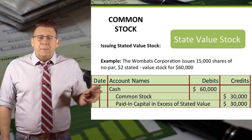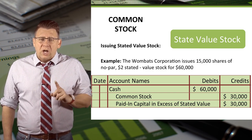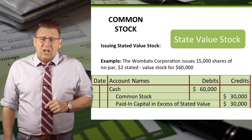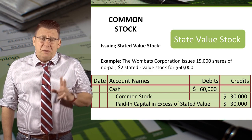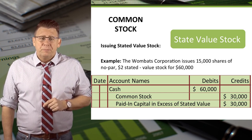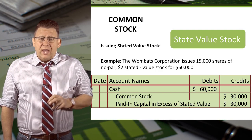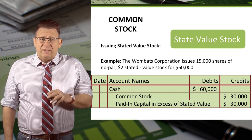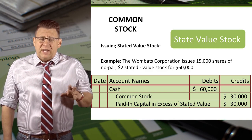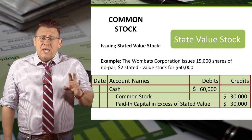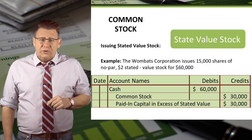In this example, the Wombat Corporation issues 15,000 shares of no par, $2 stated value stock for $60,000. The accounting for stated value stock and par value stock are very similar. Cash is debited for $60,000 and common stock is credited for its stated value, which in this case is $30,000. Finally, the difference is credited to an account called paid-in capital in excess of stated value for $30,000.